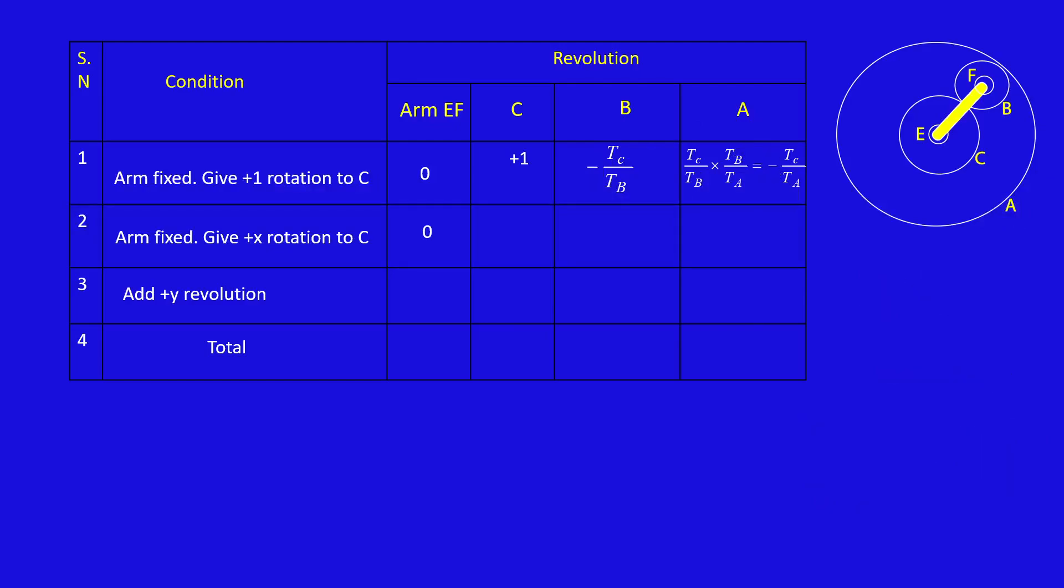Then second row multiply first row by X. X times TC by TB, X times TC by TA. Third row we are adding plus Y revolution. Then total we need to add rows 2 and 3. Y, X plus Y, Y minus X TC by TB, Y minus X TC by TA. So this is the last row.